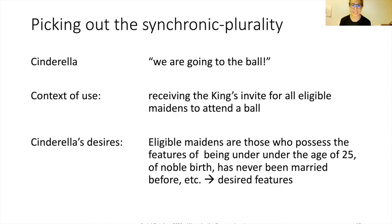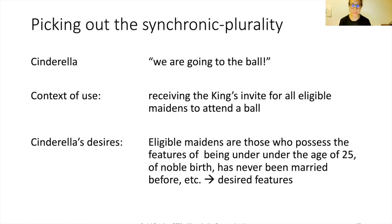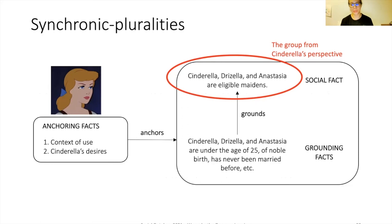Desired features are features that person stages possess and are relevant to our consideration of a particular group's identity. Two rules guide when a feature counts as a desired feature: first, the context of use — the context of a person stage's use of a we-token; and second, the person stage's desires regarding the group she intends to refer to given that context of use. In the Cinderella case, the context of use is receiving a king's invitation for all eligible maidens to attend the ball.